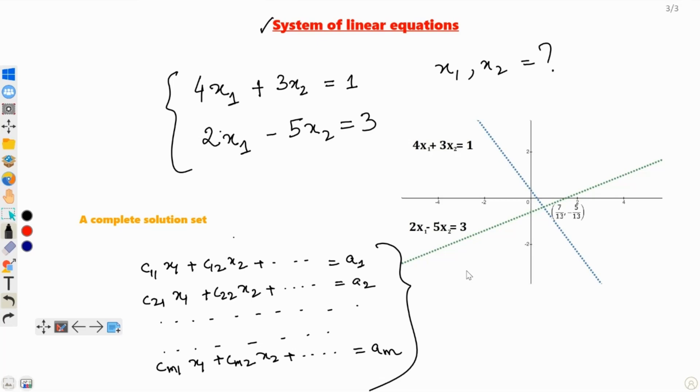Yes, you heard it right. There are three choices. And what are they? Either there is no solution, a unique solution like this, or there is an infinite number of solution.